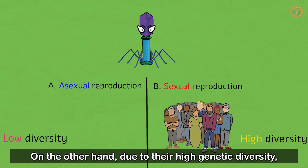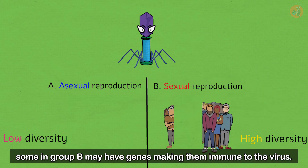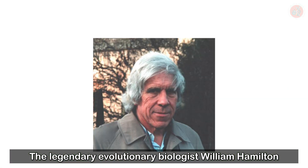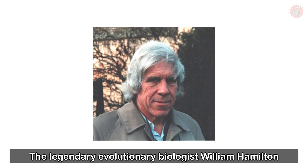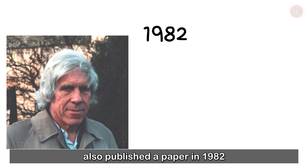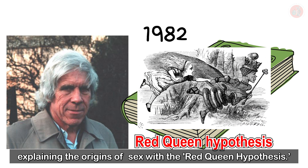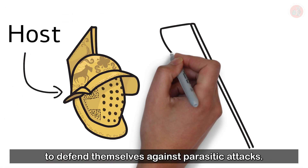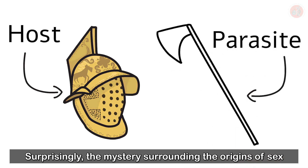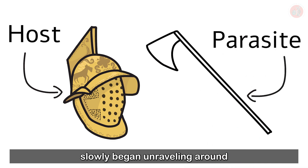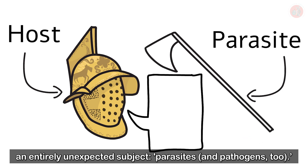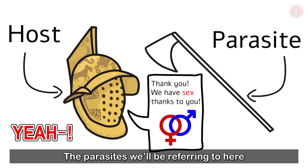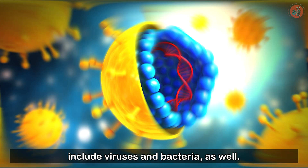On the other hand, due to their high genetic diversity, some in group B may have genes making them immune to the virus, meaning they will survive. The legendary evolutionary biologist William Hamilton also published a paper in 1982 explaining the origins of sex with the Red Queen hypothesis. He argued that potential hosts evolved sex to defend themselves from parasitic attacks. Surprisingly, the mystery surrounding the origins of sex slowly began unraveling around an entirely unexpected subject: parasites and pathogens, including viruses and bacteria.